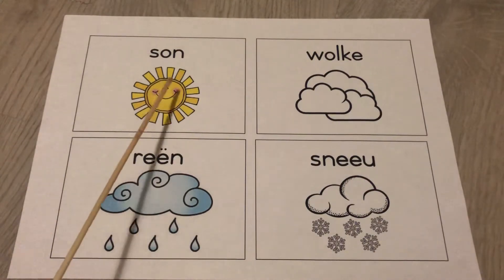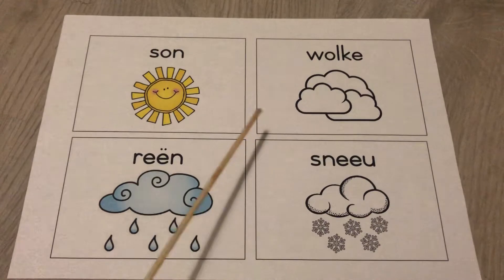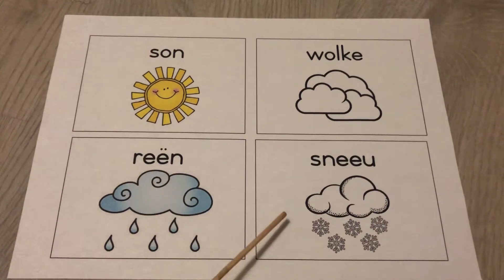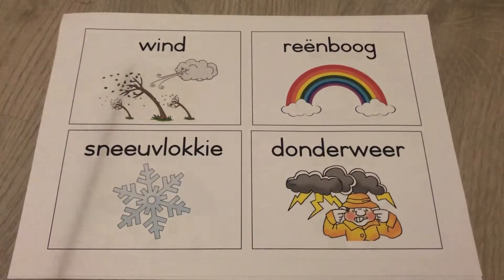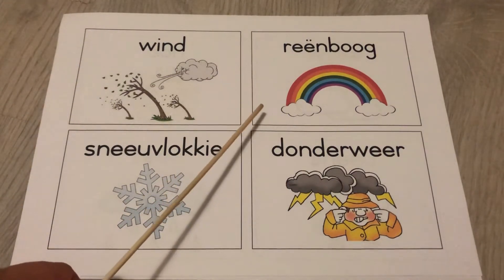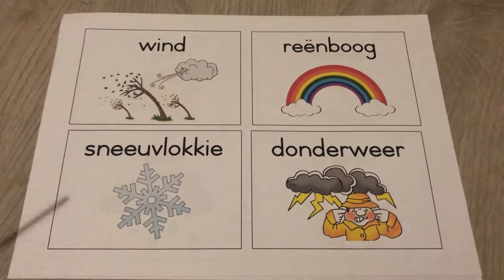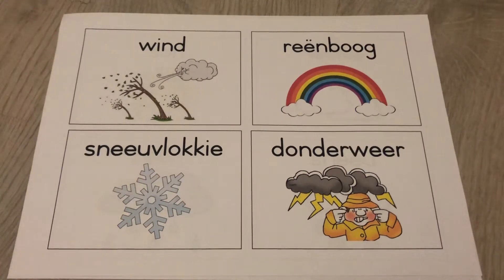Son is the sun. Wolke is clouds. Reen is rain. Sneeu is snow. Wind is the wind. Reenboog is a rainbow. Sneeuflukie is a snowflake. Donderweer is thunder.